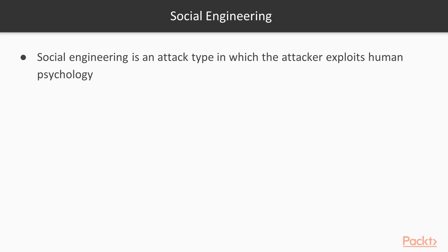The kind of sensitive information that can be gathered includes phone numbers, fax numbers, the address of the office, who is the boss, what is the boss's name, and what is the boss's number. These kinds of information can be grabbed by using a social engineering attack.